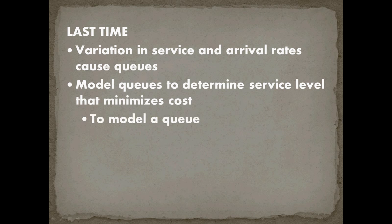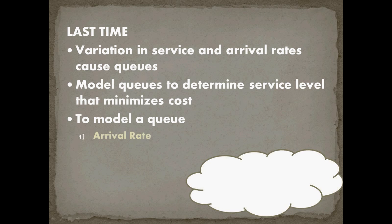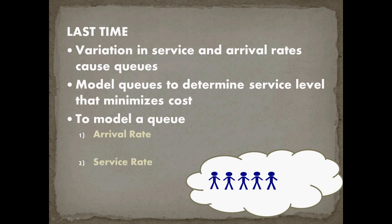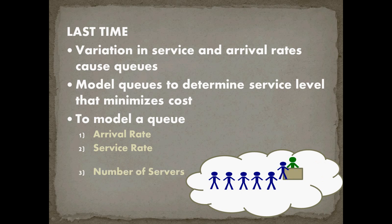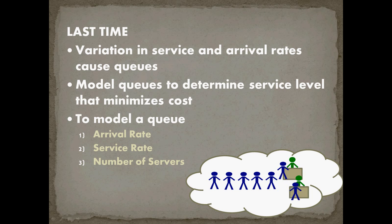In order for us to develop our analytic model of a queue, we needed three things: the arrival rate — how fast our customers are showing up; the service rate — how fast a server can handle our customers; and the number of servers — how many people or machines are there to process our customers.